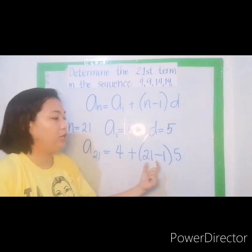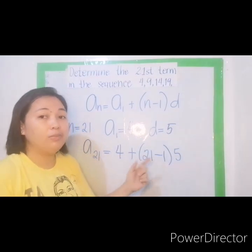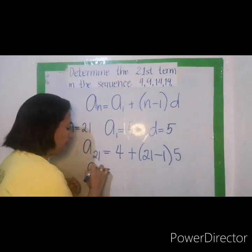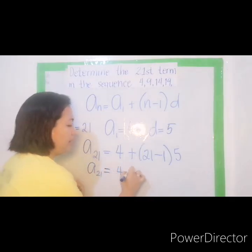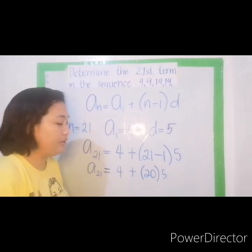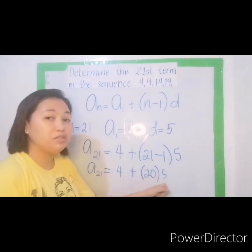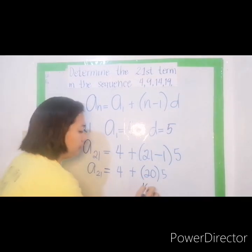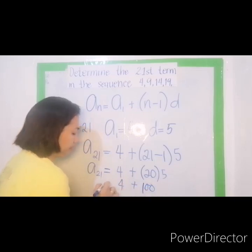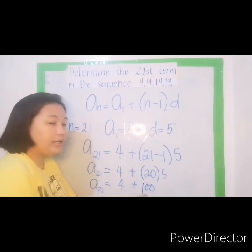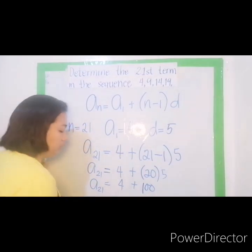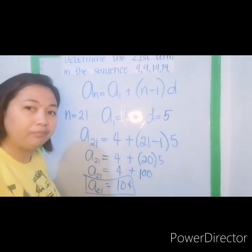Now let us perform the operation. First, you have to simplify yung nasa loob ng parentheses. a sub 21 equals 4 plus 21 minus 1 is 20 times 5. So since you have here multiplication, siya muna yung gawin natin. 20 times 5 is 100, plus 4. So 100 plus 4 that is equal to 104. Therefore, a sub 21 or the 21st term is 104.